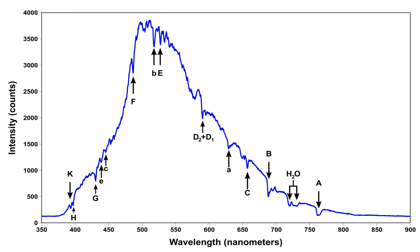Spectral lines are highly atom-specific, and can be used to identify the chemical composition of any medium capable of letting light pass through it — typically gas is used. Several elements were discovered by spectroscopic means, such as helium, thallium, and caesium.